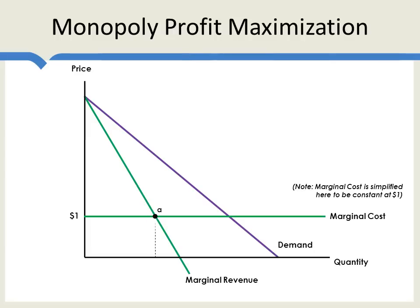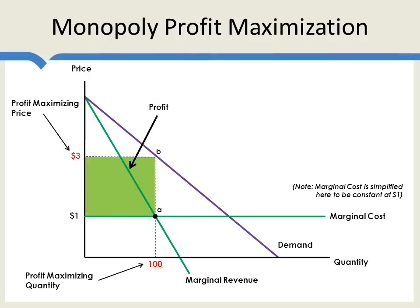At point A, we find the profit-maximizing quantity, and then we ask: what is the most the monopolist can sell this quantity for per unit? It's $3 per unit. The profit is then given by this green area, and the deadweight loss is given by this area here. The deadweight loss happens because consumers are willing to pay — they value the product more than its marginal cost — but the monopolist is not willing to sell to these consumers because to do so would require lowering the price and thus lowering his profits.